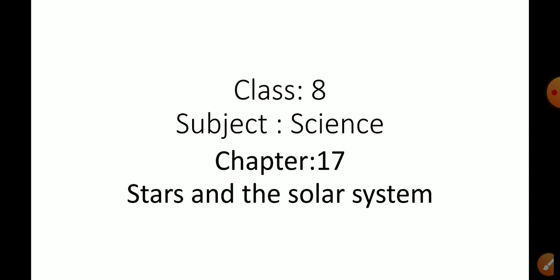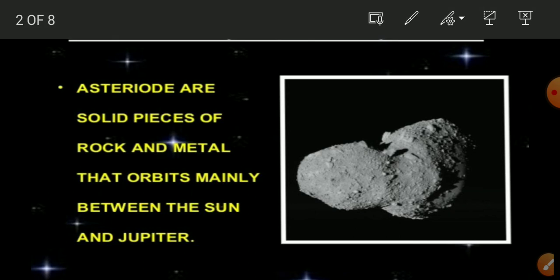Other than these planets, some other members are also present in the solar system. Those other members are asteroids, comets, meteoroids, and artificial satellites. The first member we will discuss is asteroids.